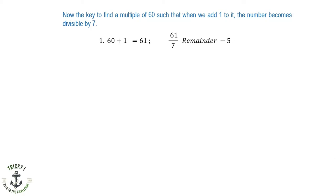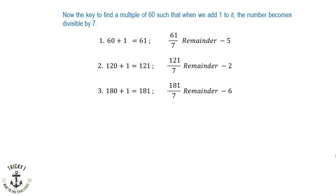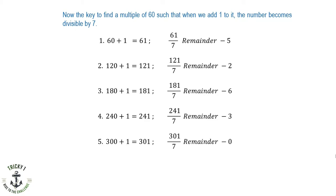61 divided by 7 has a remainder. The second multiple: 120 plus one equals 121; 121 divided by 7 also has a remainder. Third multiple: 180 plus one equals 181; 181 divided by 7 also has a remainder. Fourth multiple: 240 plus one equals 241; 241 divided by 7 also has a remainder. The fifth multiple: 300 plus one equals 301; 301 divided by 7 has no remainder. So the least possible number of strawberries is 301.